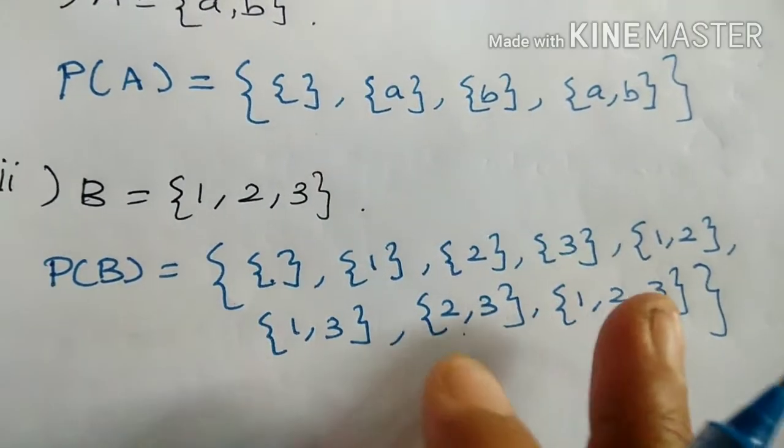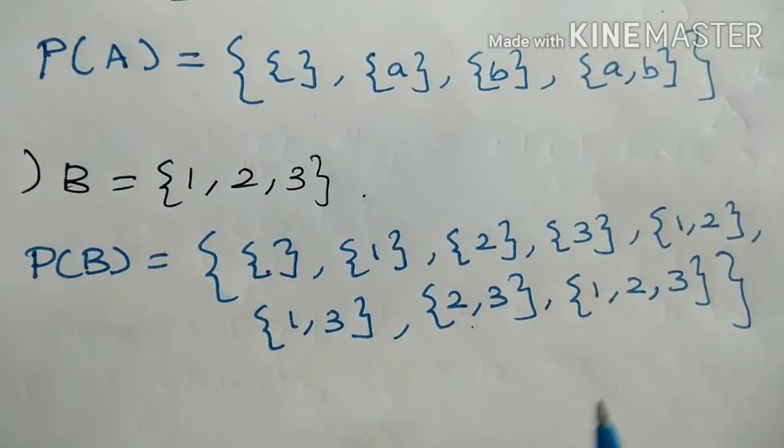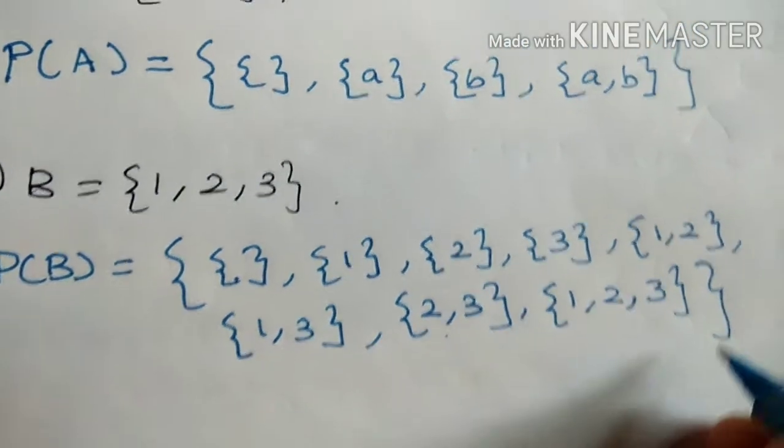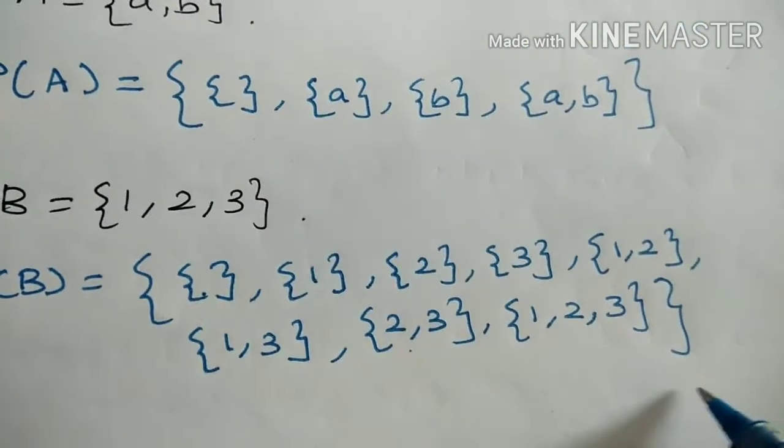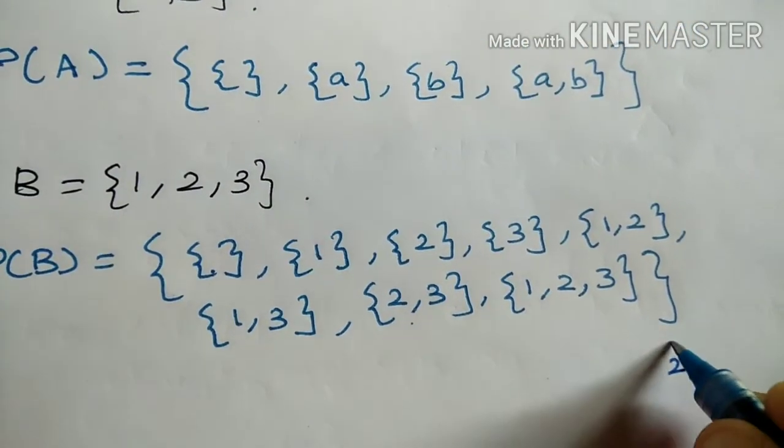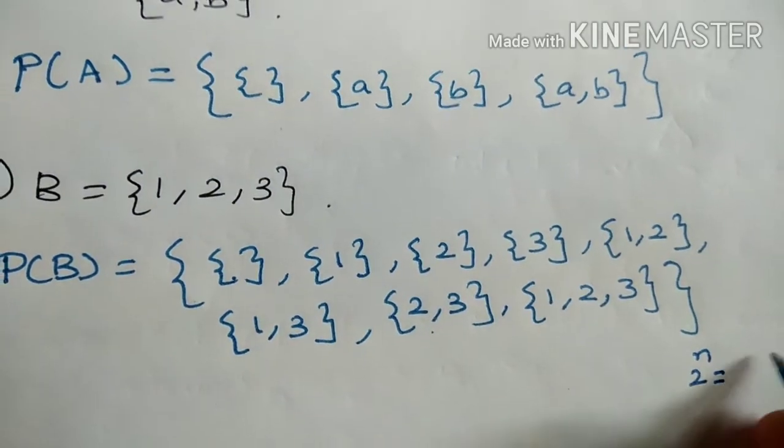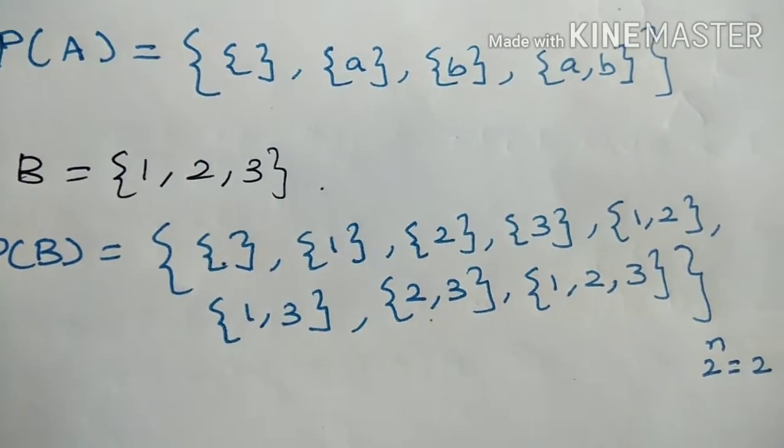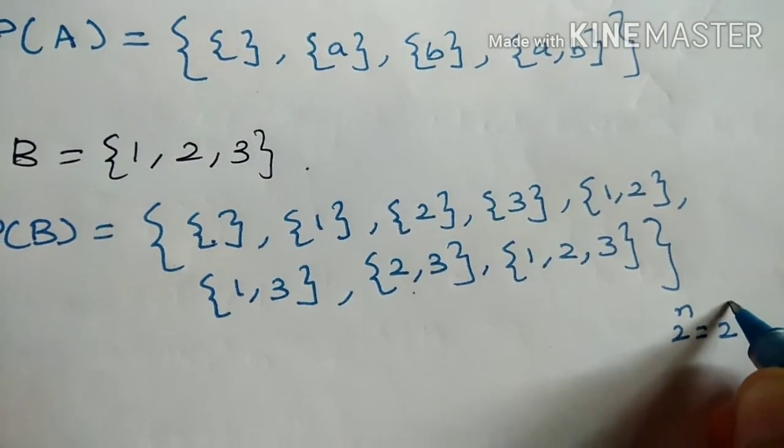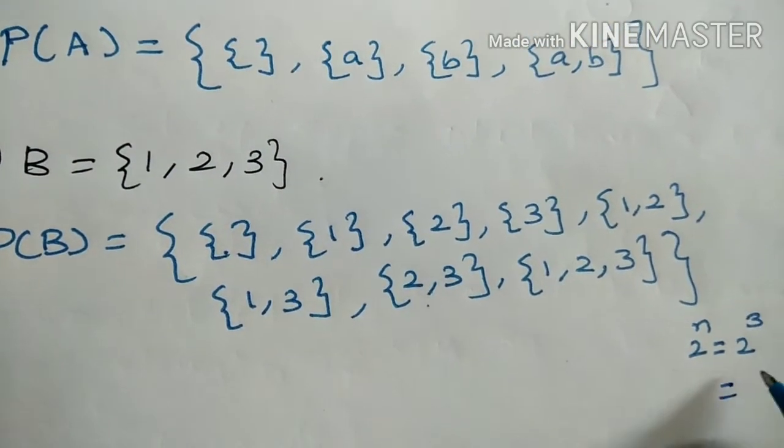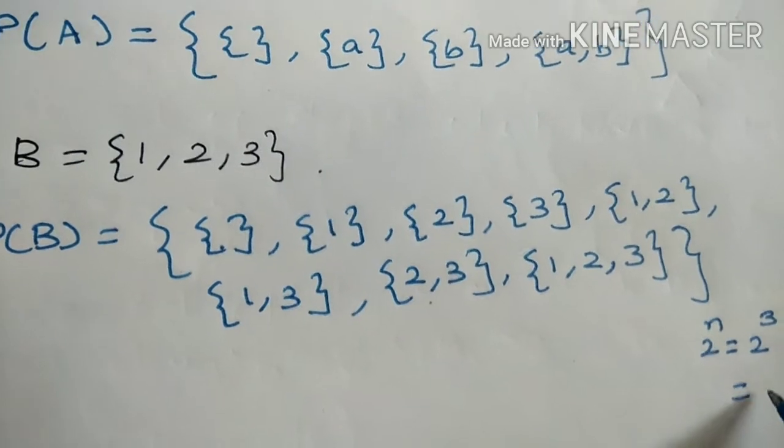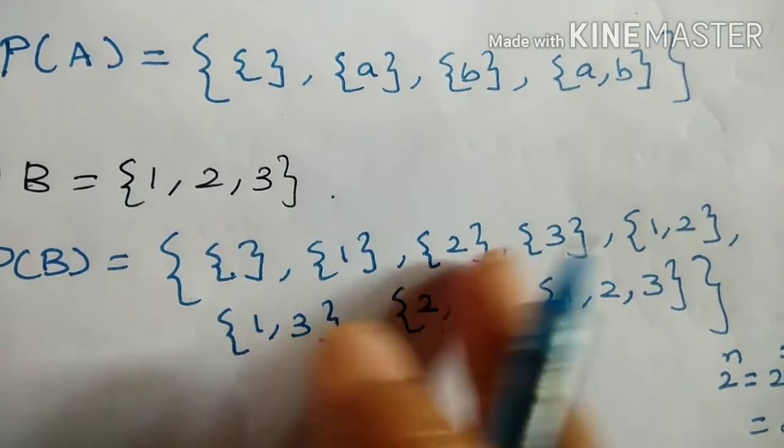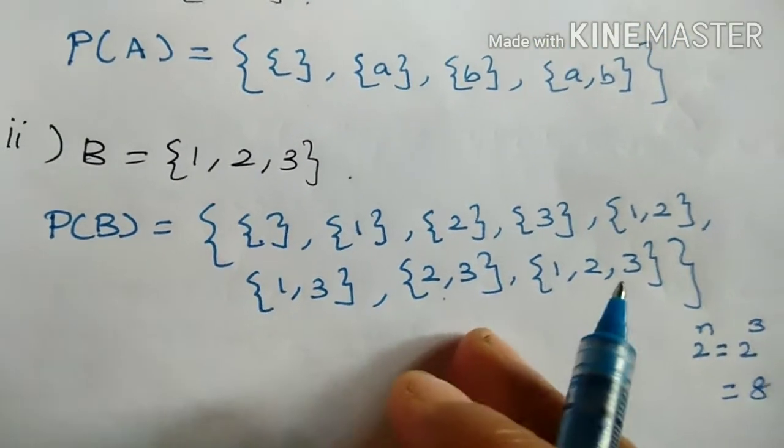8 is correct. You have to write anything. How do you write? You can write it rough. 2 power n. How many elements are there? 1, 2, 3. So 2 power 3: 2 into 2 into 2 equals 8. If you have 8, you can write the answer correct.